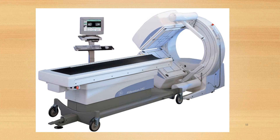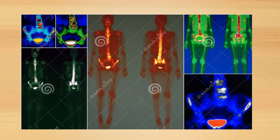Nuclear imaging — the PET scan, or positron emission tomography — creates computerized images of chemical changes such as sugar metabolism that take place in tissue. The patient is given an injection of a substance. Uses include detecting cancer, assessing whether cancer has spread, evaluating treatment effect, detecting if cancer has returned, looking for sites of infection, and identifying heart and brain diseases.